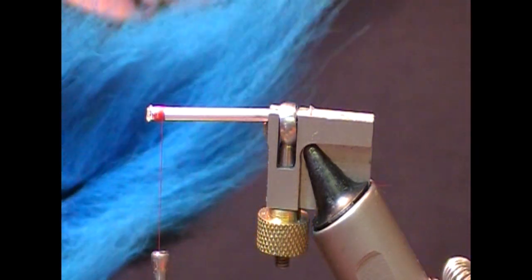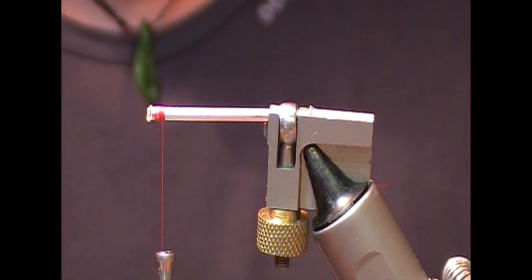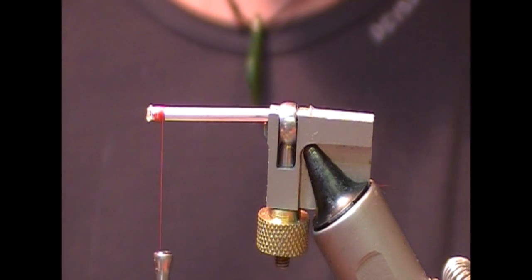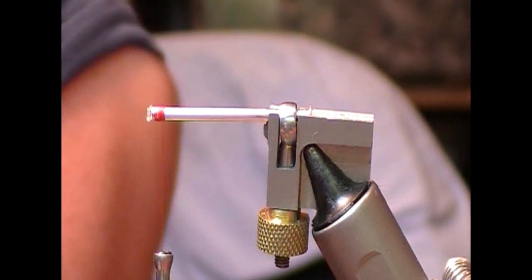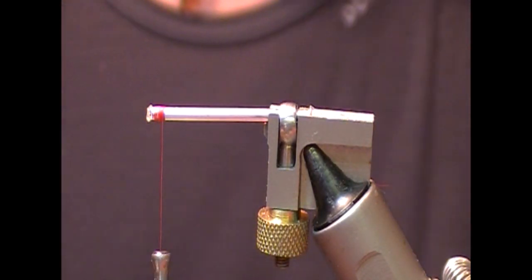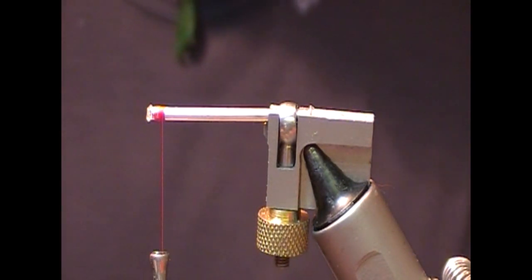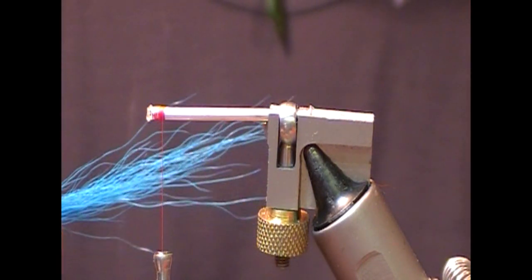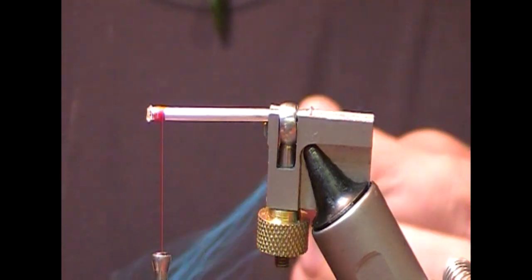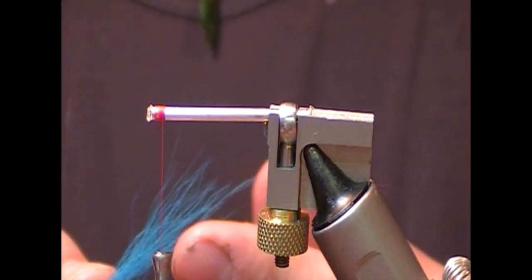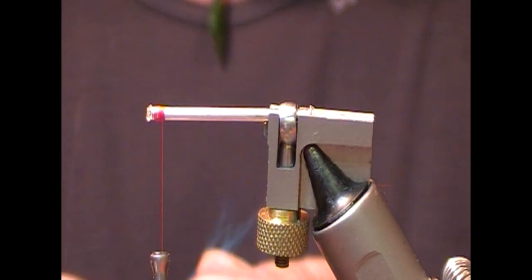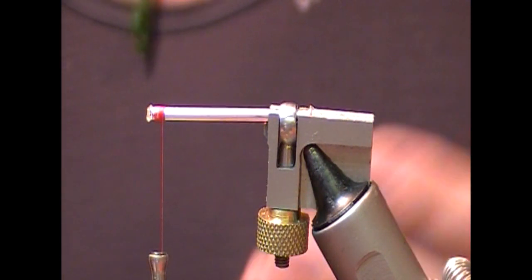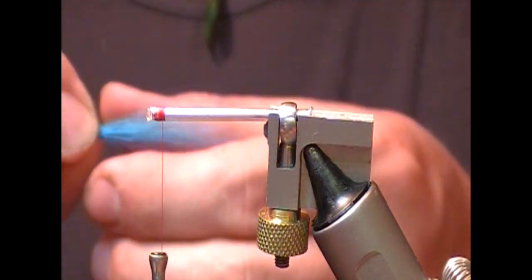So we take a blue bucktail and take a bunch of that, I suppose the longest fibers, and then place the bunch back on level with it. And that way line it up without using a hair stacker and without it looking unnaturally square ended.